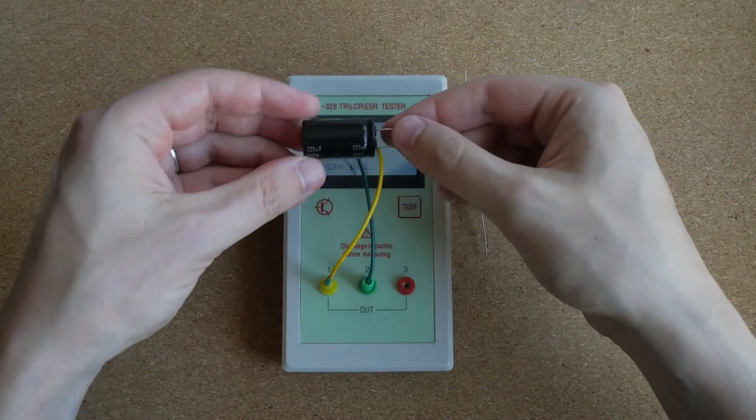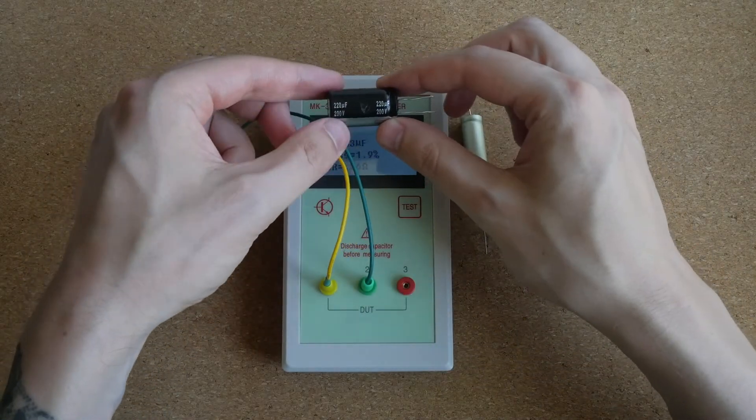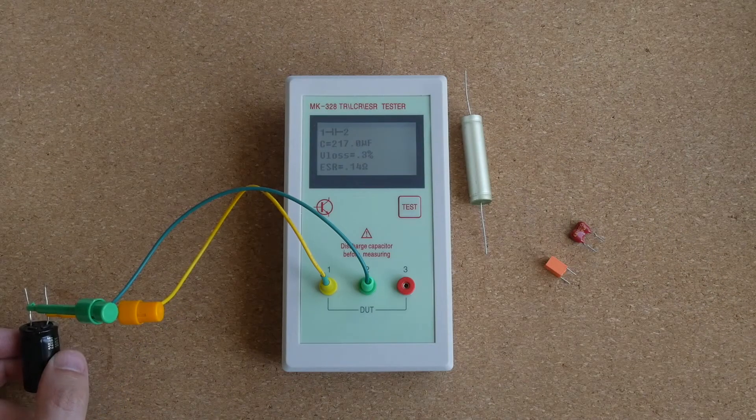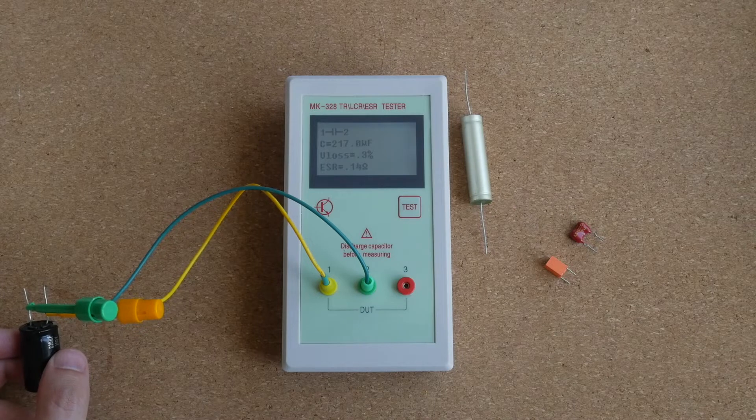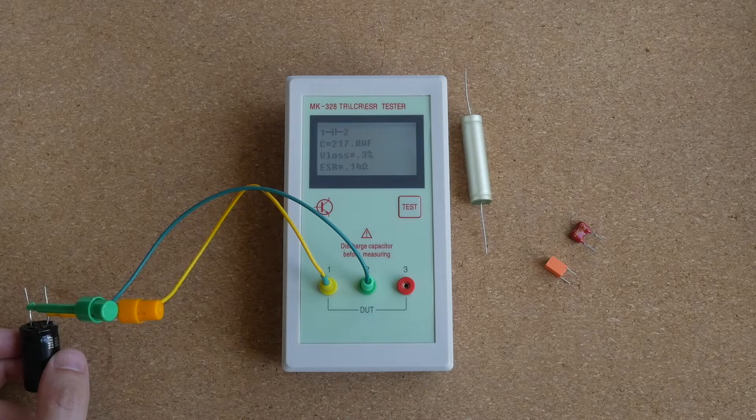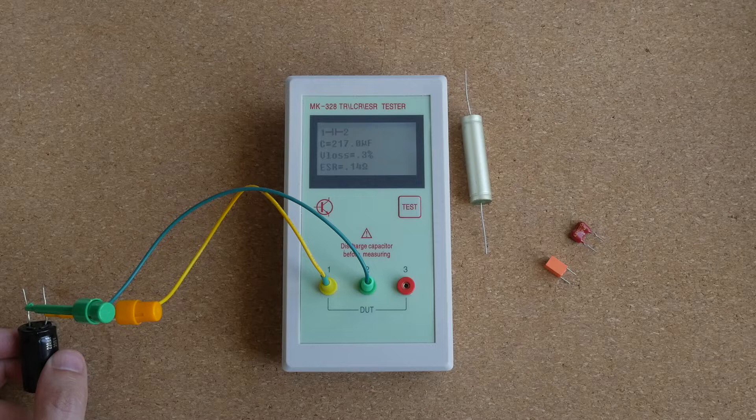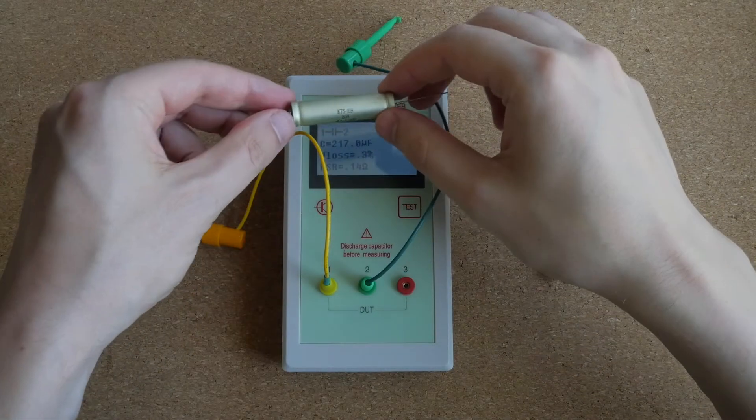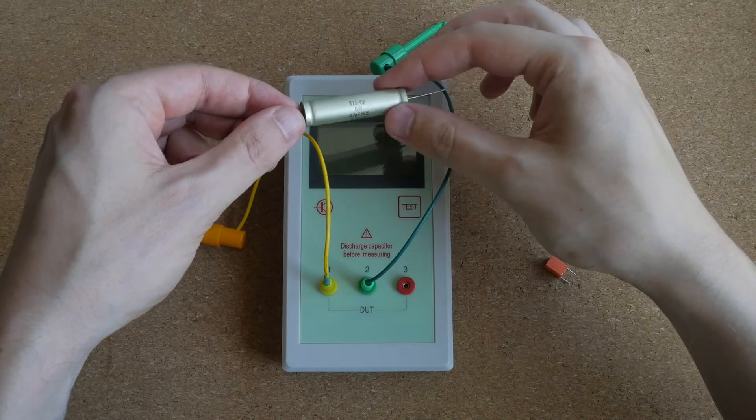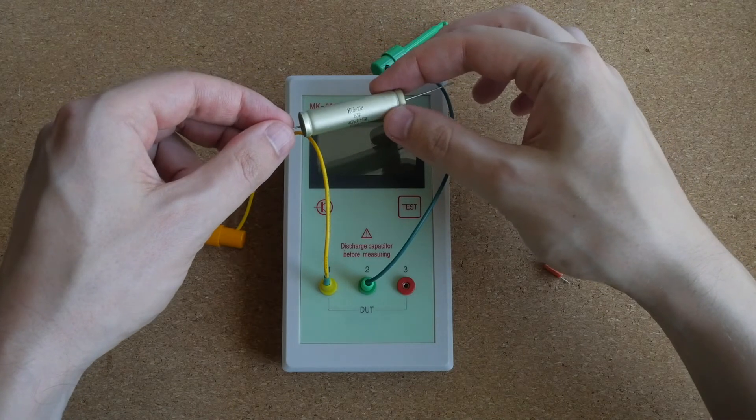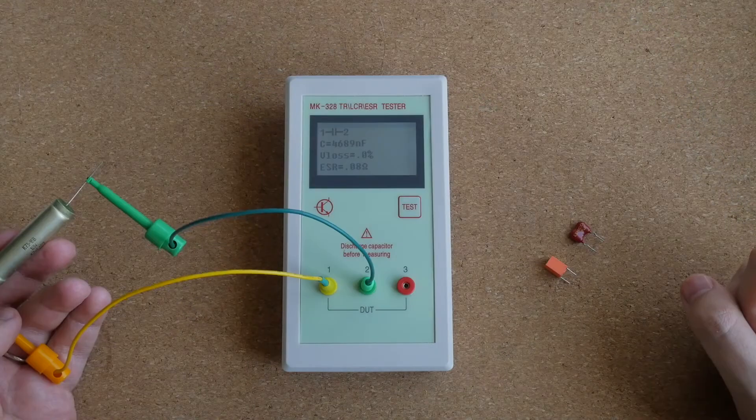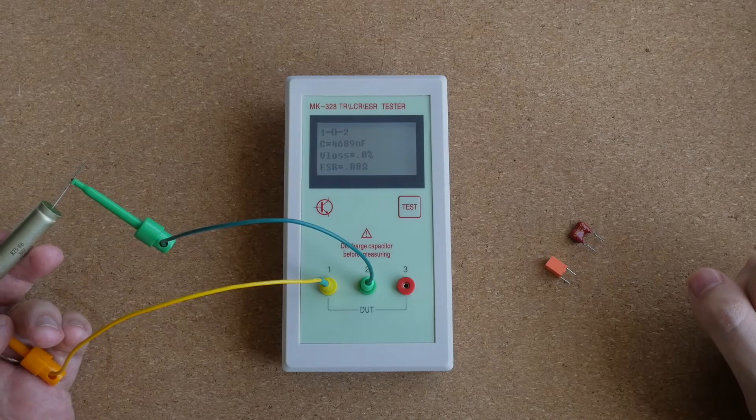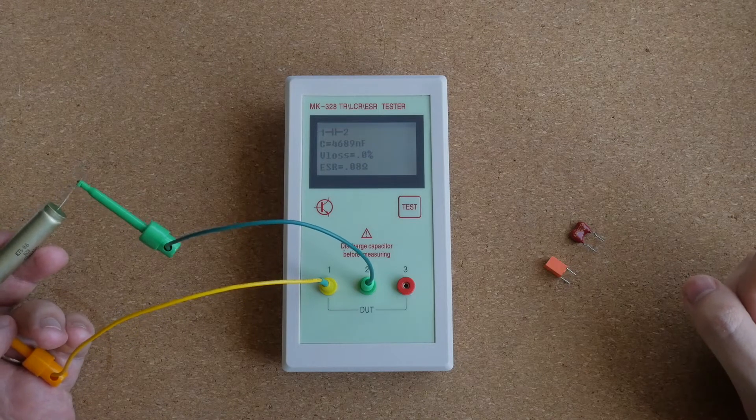The next one is 220 microfarad at 200 volts. 217 microfarad, ESR 0.08 ohm. The next one is this old Soviet film cap. 4.7 microfarads at 63 volts. 4.69 microfarad. We lost 0% and ESR 0.08 ohm.